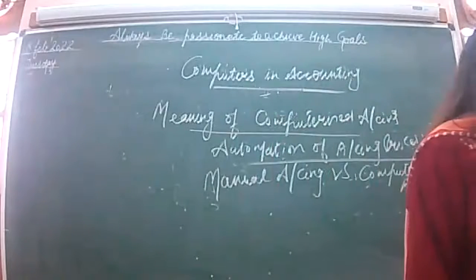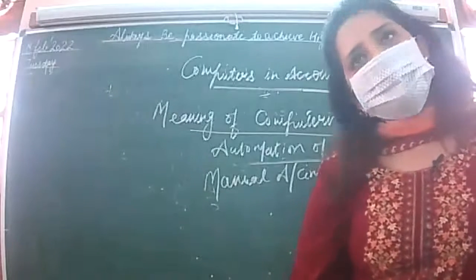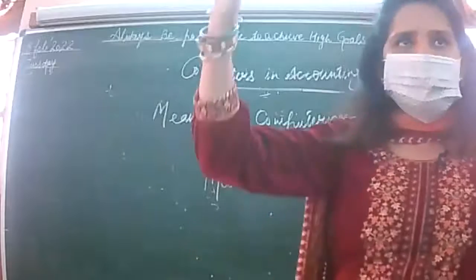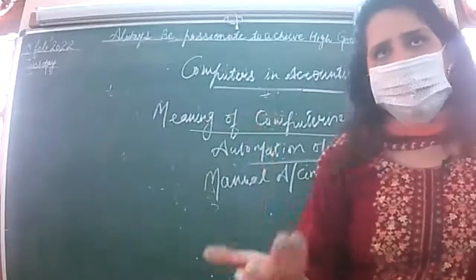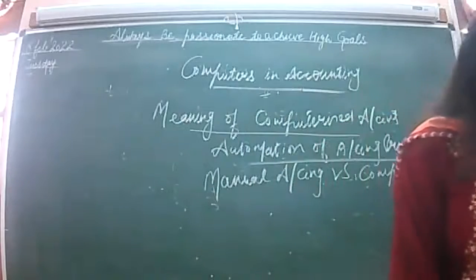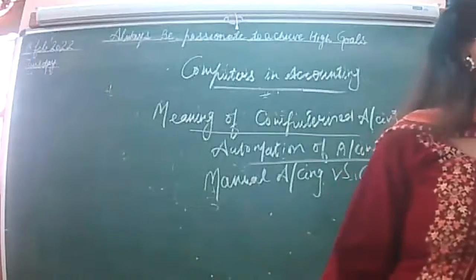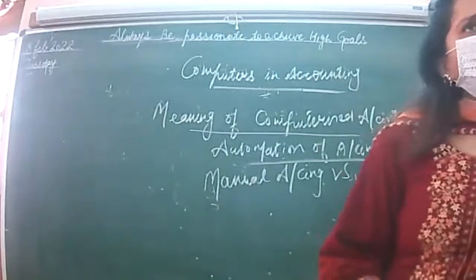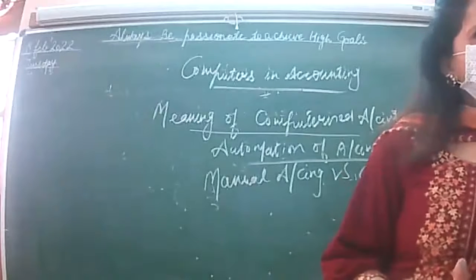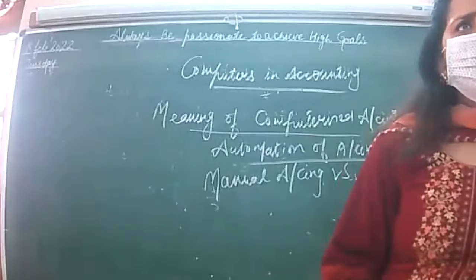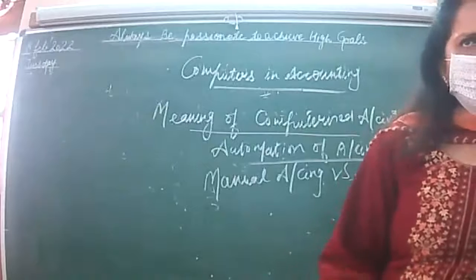Then summarizing: in computerized accounting, data is fed and the summary is automatically prepared in the form of a trial balance. In manual accounting, you prepare the trial balance manually. Now regarding adjustment entries in both types: closing stock adjustment entry — the closing stock account is updated to the trading account. Whenever it appears as an adjustment it has to be shown on the credit side of the trading account.